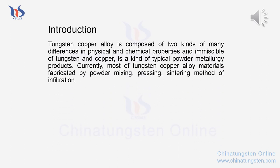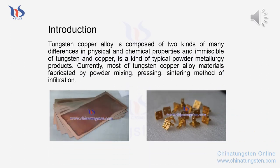Tungsten copper alloy is composed of two kinds of materials with many differences in physical and chemical properties — the immiscible elements tungsten and copper. It is a kind of typical powder metallurgy product. Currently, most tungsten copper alloy materials are fabricated by powder mixing, pressing, and sintering method of infiltration.